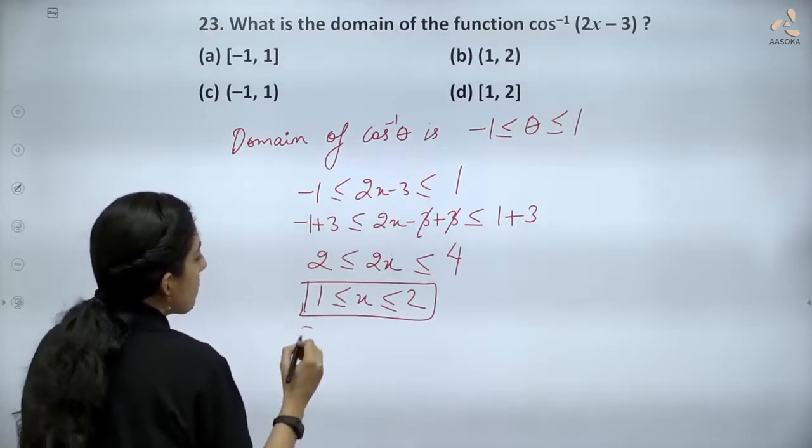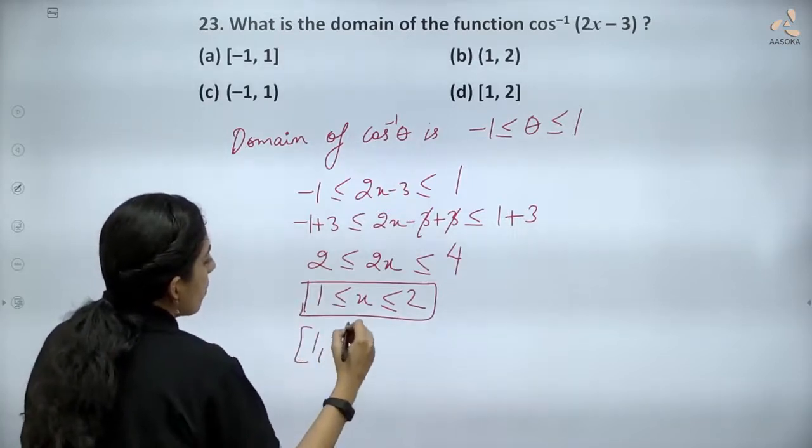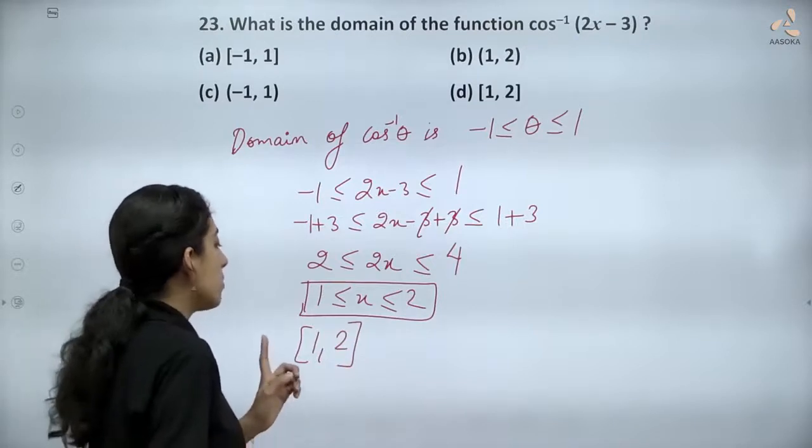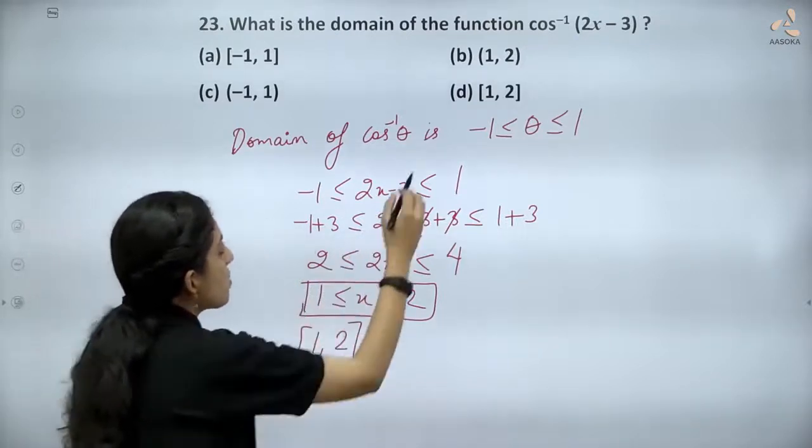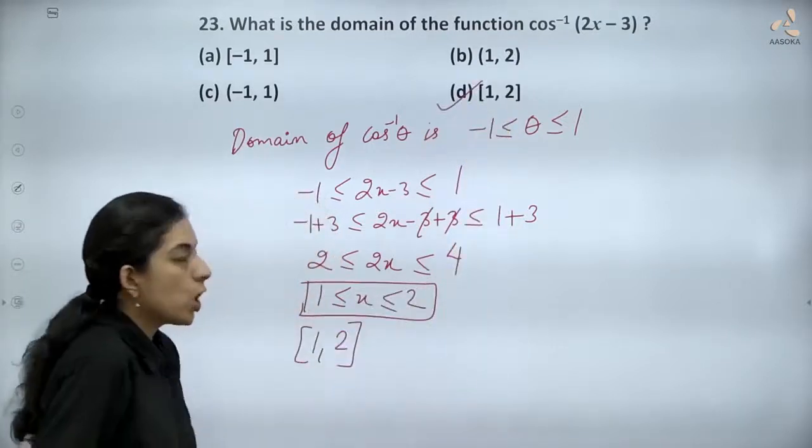Hence the domain will be in the closed interval 1 comma 2. So which is the correct option? D is the correct option.